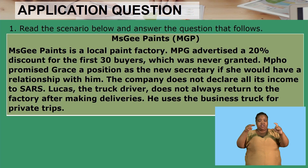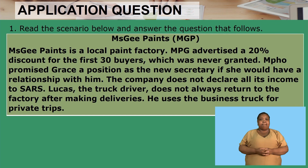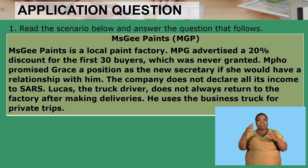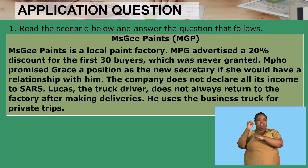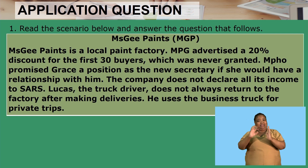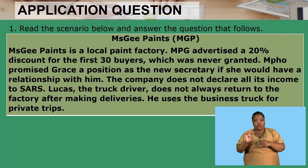Application question number one reads as follows: Read the scenario below and answer the questions that follow. The name of the business is Miss G Paints, which is MGP. Miss G Paints is a local paint factory. MGP advertised a 20% discount for the first 30 buyers, which was never granted.